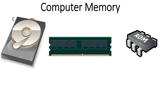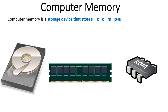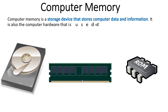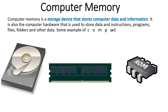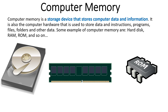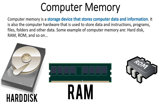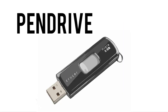Computer memory is the storage device that stores the data and information of the computer system. They are the hardware part of our computer system that are capable of storing computer data, programs, files and folders, or any kind of information. Some examples of computer memory are hard disk, RAM, ROM, CD, DVD, and pen drive.